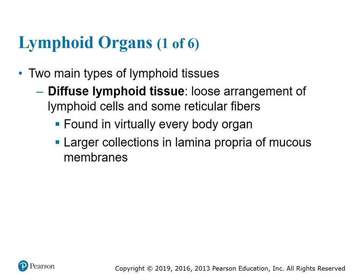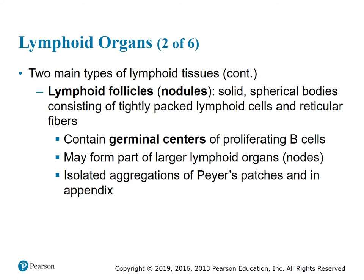Two main types of lymphoid tissues: the first is diffuse lymphoid tissue, which is a loose arrangement of lymphoid cells and some reticular fibers found in virtually every body organ, with larger collections in the lamina propria of mucous membranes. The second type is lymphoid follicles, or nodules — solid spherical bodies consisting of tightly packed lymphoid cells and reticular fibers. They contain germinal centers of proliferating B cells, may form part of larger lymphoid organs or nodes, and isolated aggregations called Peyer's patches are found in the ileum and the appendix.